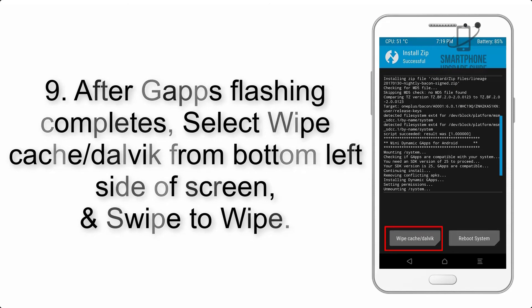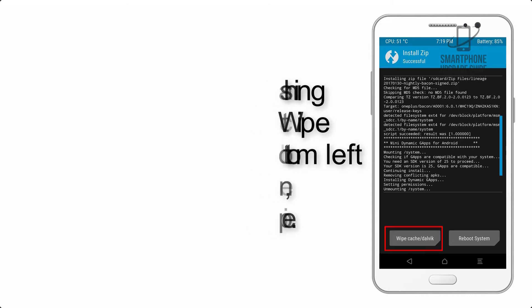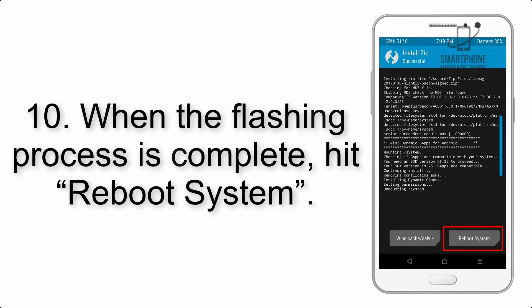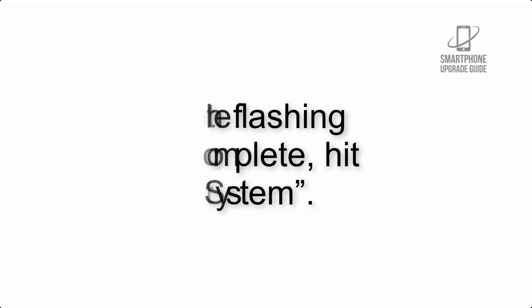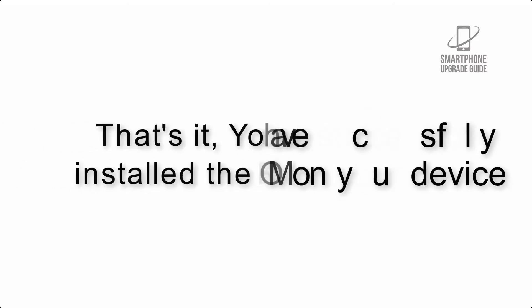Step 8: Flash the GApps zip package in the same manner. Step 9: After GApps flashing completes, select Wipe Cache and Dalvik from the bottom left side of the screen and swipe to wipe. Step 10: When the flashing process is complete, hit Reboot System. That's it — you have successfully installed the ROM on your device.